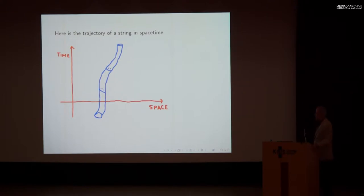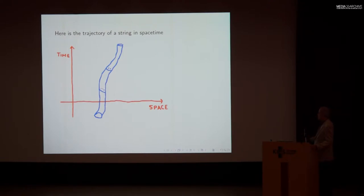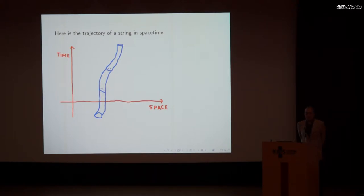Here's the trajectory of the string in spacetime. At some given time we had a loop of string; later on the loop was here, and still later it was here. As it evolves in time, the string fills out a little tube in spacetime. That's a classical picture of the orbit of a string in spacetime. The quantum picture is a fuzzy version of the classical picture, which unfortunately we can't draw.